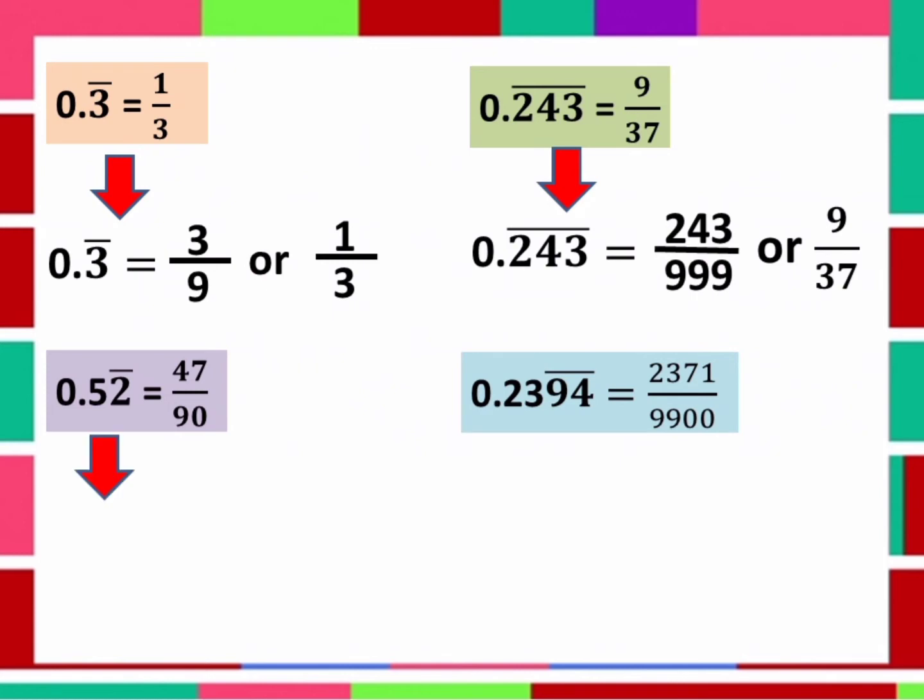How about in this example, 0.52 and 2 is a repeating number. In this given, 5 is not a repeating decimals and 2 is a repeating decimals. If the repeating decimals is equal to 9, remember that the non-repeating is equal to 0. So 0.52 with a bar is equal to, first, we count how many digits repeats in this example. There is 1 digit. So therefore, we put 1, 9 in the denominator.